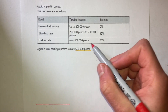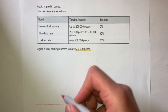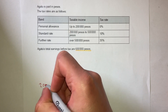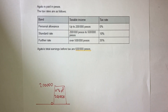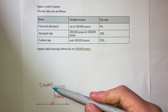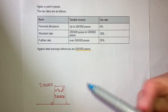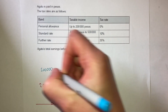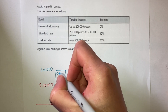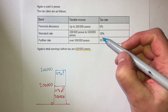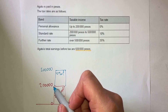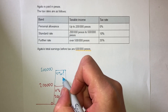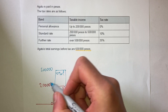In the first bar, up to 200,000 pesos is zero percent. The second bar goes from 200,000 to 500,000, and this is 10%. Remember it's 10% of the difference — this bar goes from 200,000 to 500,000, so I need to find 10% of 300,000.